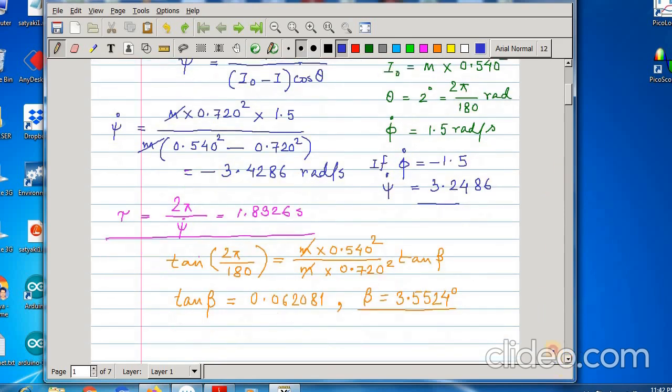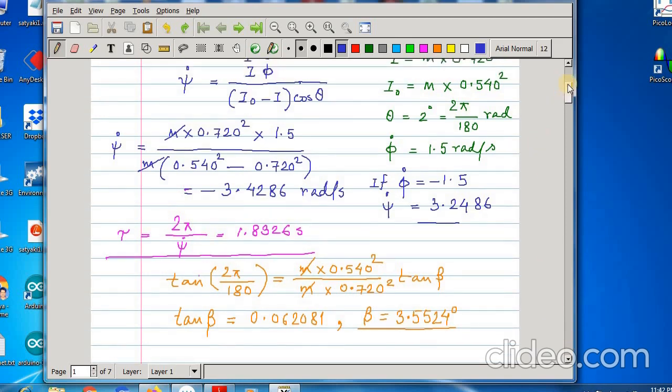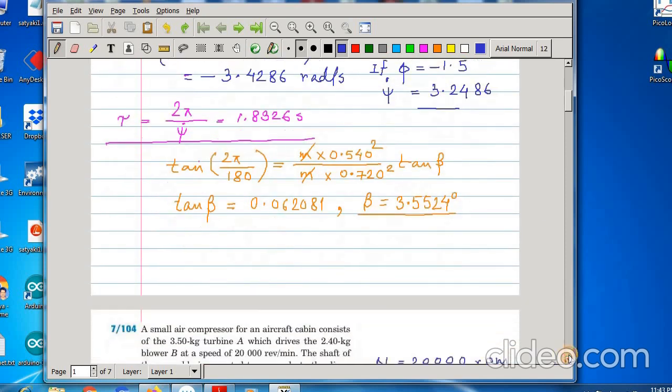And what is angle beta? Angle theta is given as 2 degrees that is 2 pi by 180 radian. This means tan beta is this and beta is this much in degree. So, beta is greater than theta which shows that it is a case of retrograde precession.